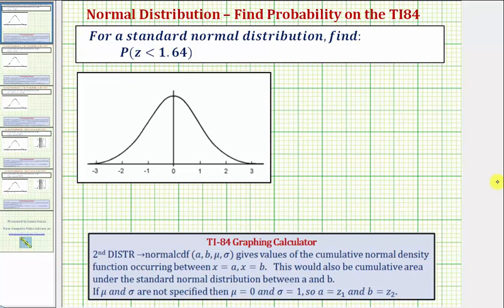Welcome to an example on how to use the newer version of the TI-84 to determine the probability that a z-score is less than a given value for a standard normal distribution. Here we're asked to determine the probability that the z-score is less than 1.64.